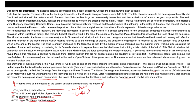Now looking at Option 3, which states the change of the role of the Demiurge. The passage mentions at the end that the conflict between Yambli Kosh and his teacher Porphyry was due to the difference in Neoplatonist theories. It is also stated that particularly the change in the role of God and subsequently the role of the Demiurge caused this conflict.